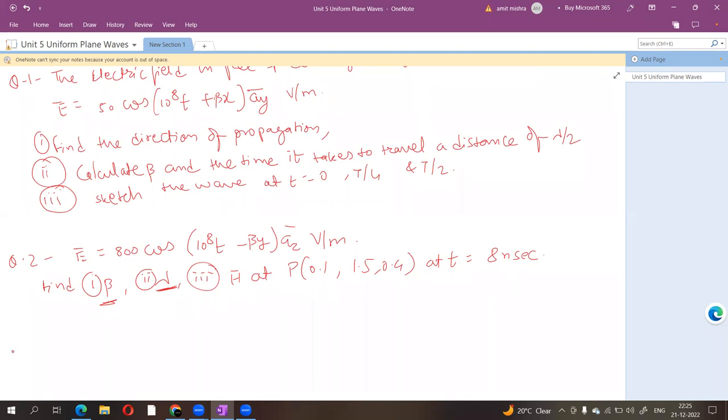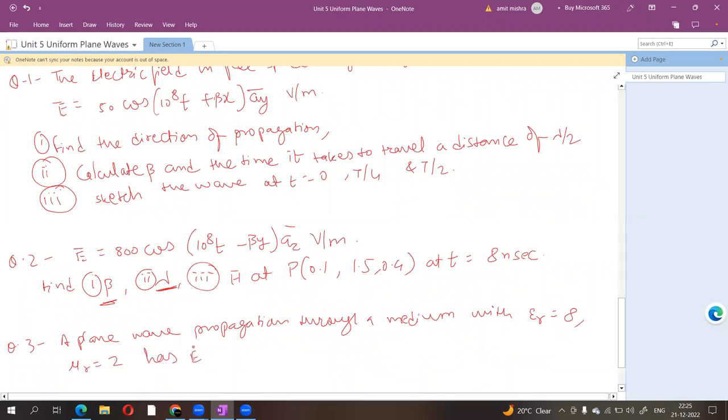There is another type of question which can be asked: a plane wave propagation through a medium with epsilon r is equal to 8, mu r is equal to 2 as e is equal to 0.5 sine of 10 raised to power 60 minus beta z a x volt per meter.